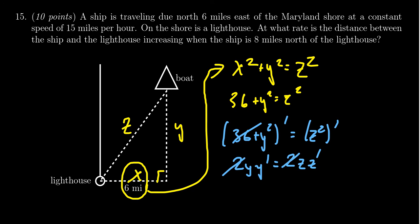And what is it we're looking for? We're looking for the rate in which the distance between the ship and the lighthouse is increasing. That's going to be z prime. That's what we care about right here. So solving for z prime, we see that z prime is going to equal yy prime over z. So what can we plug in here now?